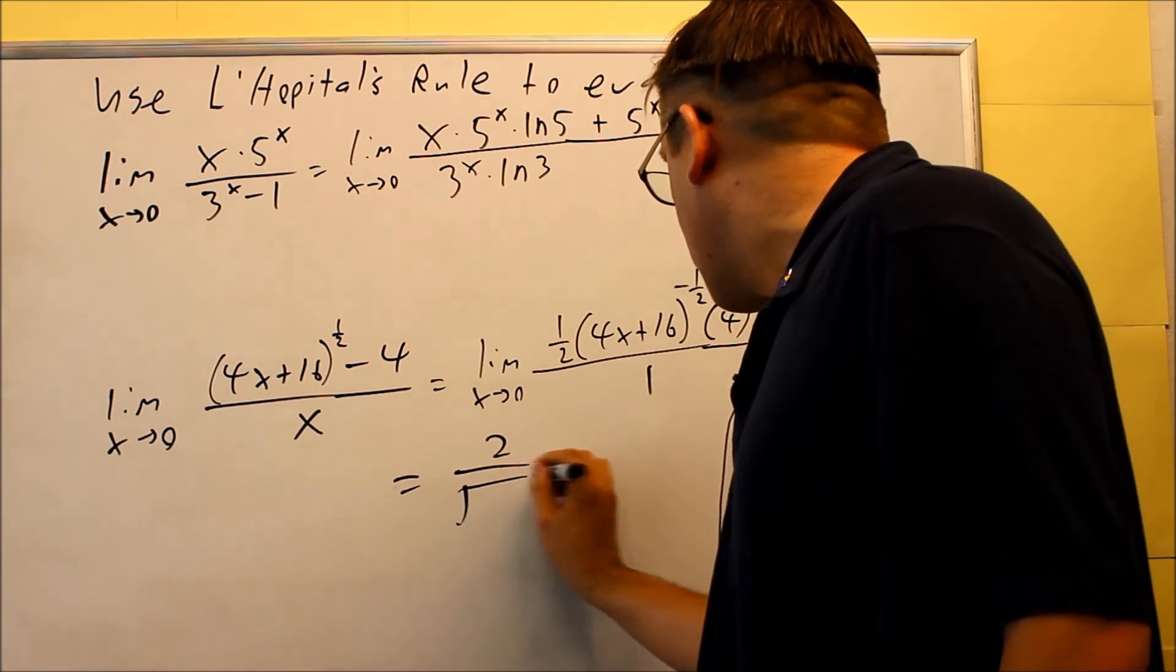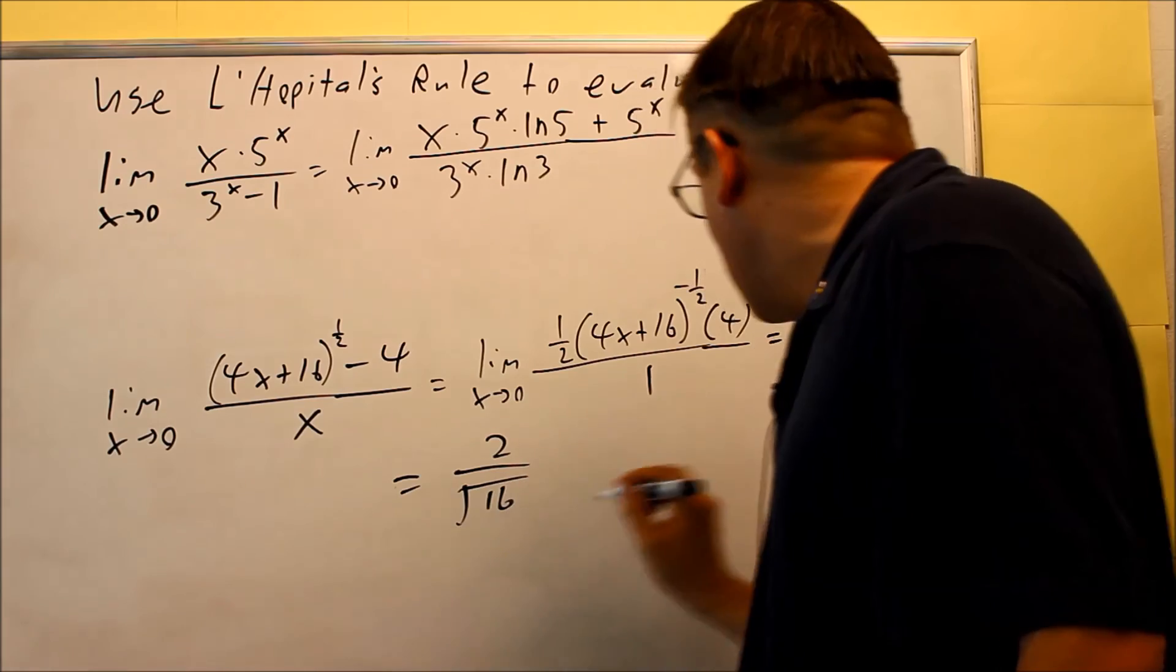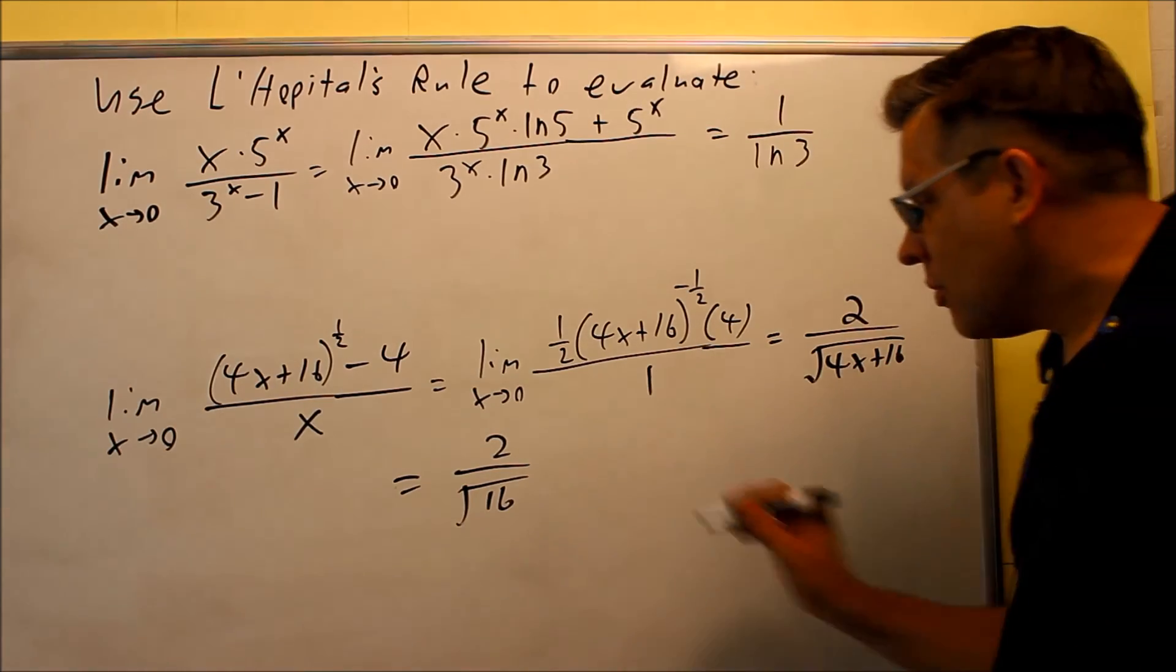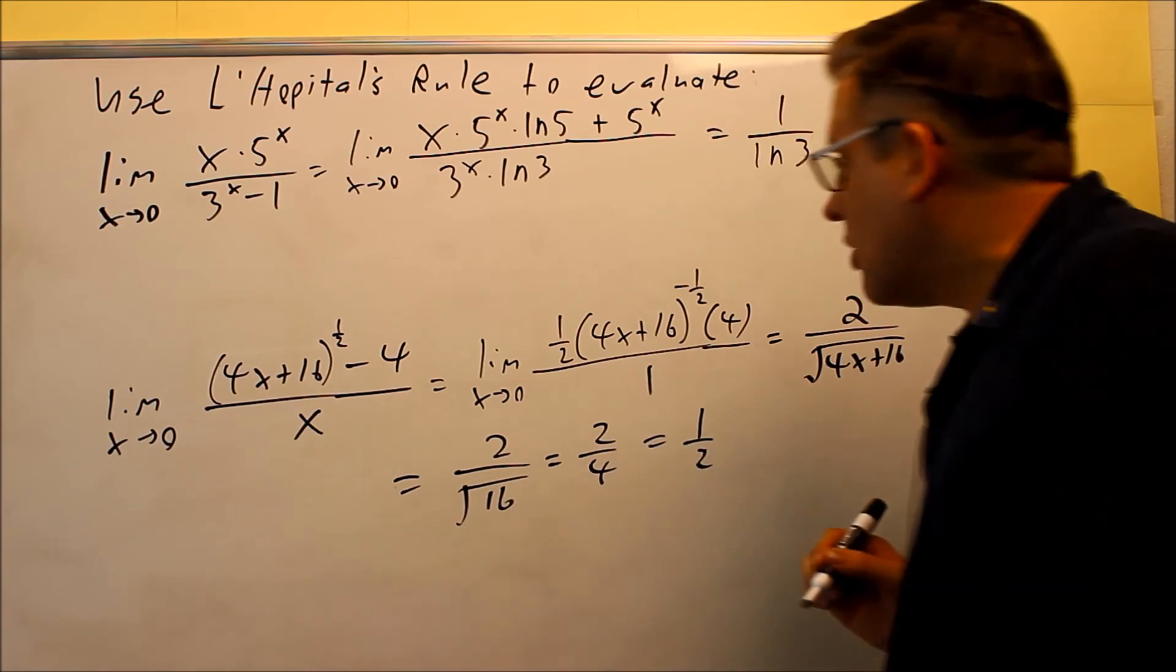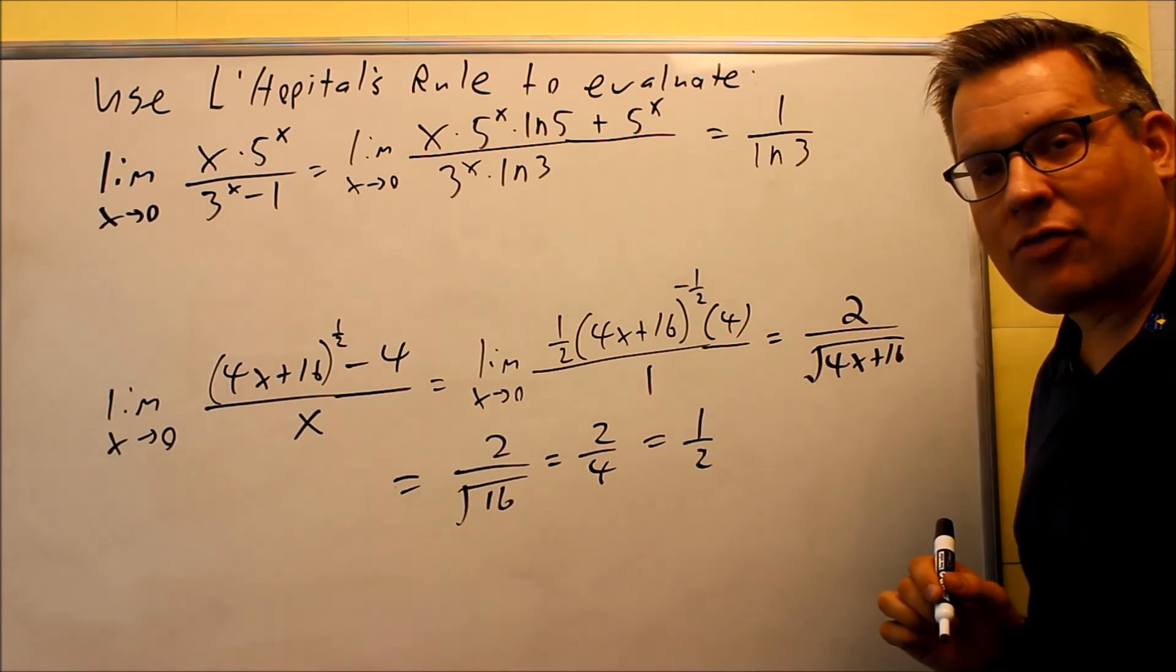I have 2 over √16. Since 4 times 0 is 0, that gives me 2/4, which means the final answer is 1/2.